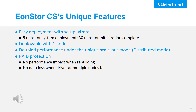After knowing all the highlights for EonStore CS, let's see its unique features compared to other scale-out storage systems. First is the easy deployment with a setup wizard. Even for setting up an entire complicated scale-out cluster, with the help of the setup wizard, it only takes 5 minutes for system deployment and 30 minutes for initialization to complete. Unlike other scale-out systems that require a minimum of 3 nodes for building a cluster, EonStore CS's unique scale-out feature allows customers to build a scale-out cluster with only one node, helping customers with a limited budget afford a scale-out storage system and expand nodes or expansion enclosures in the future as data grows.